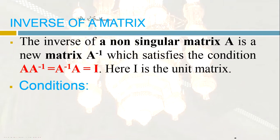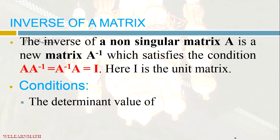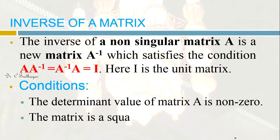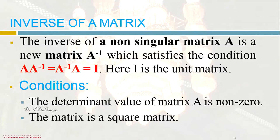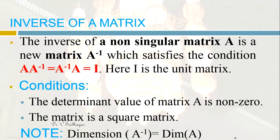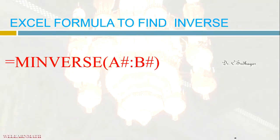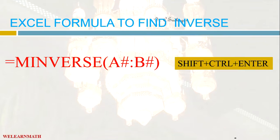There are certain conditions to find the inverse of a matrix — it is not possible to find the inverse of all matrices. The very first condition is that the determinant of the matrix is non-zero, meaning it is a non-singular matrix. The second condition is that the matrix must be a square matrix; we cannot find the inverse of a rectangular matrix. Importantly, the dimension of A and the dimension of A inverse are both the same. The formula in Excel is: equal to MINV — that is matrix inverse — open the parenthesis, choose the source cells, Shift+Ctrl+Enter.